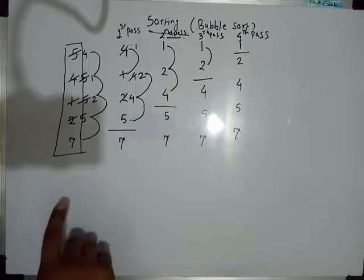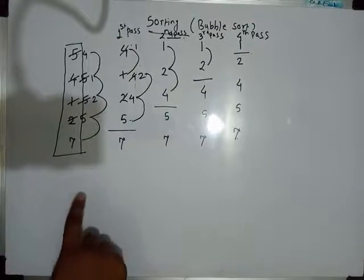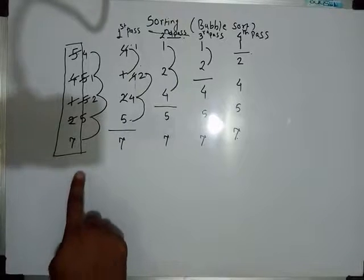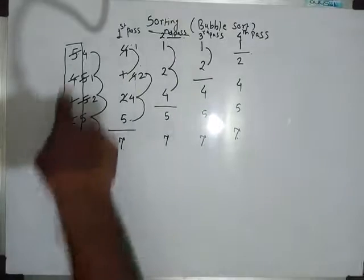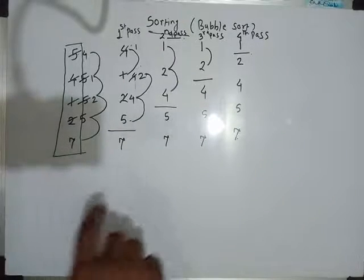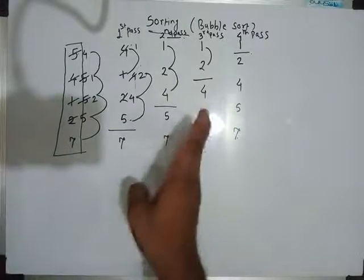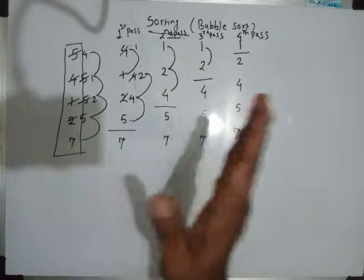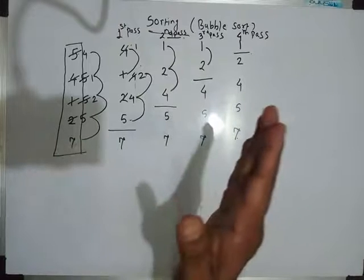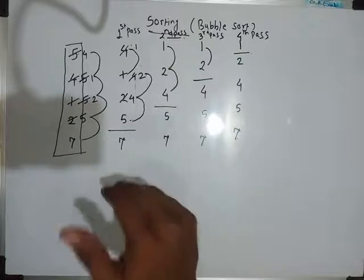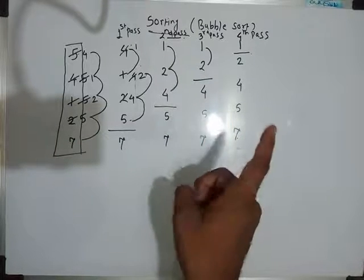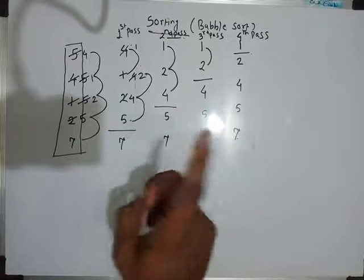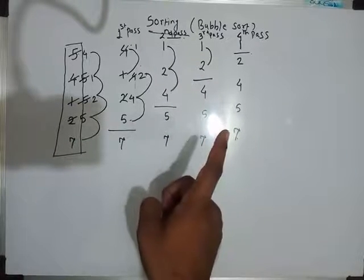If there are 5 elements there will be 4 passes. If there are 6 elements there will be 5 passes. If there are 7 elements there will be 6 passes.